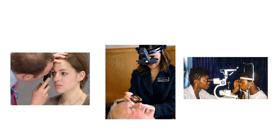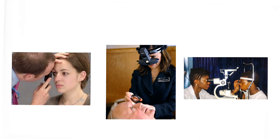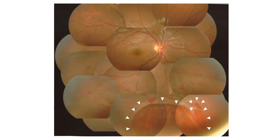We can examine the retina in various ways: through direct fundoscopy, indirect ophthalmoscopy, or using a slit lamp and a 78D lens. It is very important to check the retinal periphery as well, so it is important to put drops in the eye to rule out conditions which can affect the periphery. As you can see in this case, there is a huge tear in the periphery of the retina with bleeding.